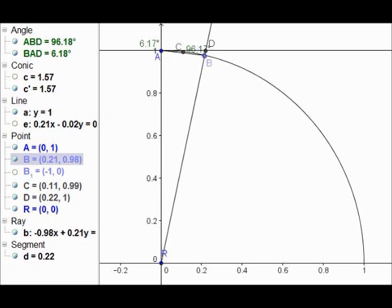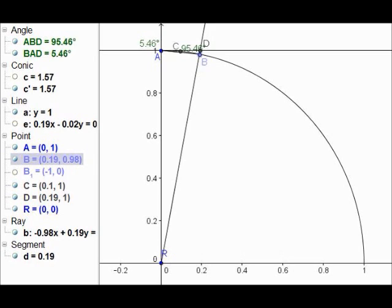Central angle ARB goes to zero, so angle ABD goes to 90 degrees. Of course, angle BAD is also going to zero,